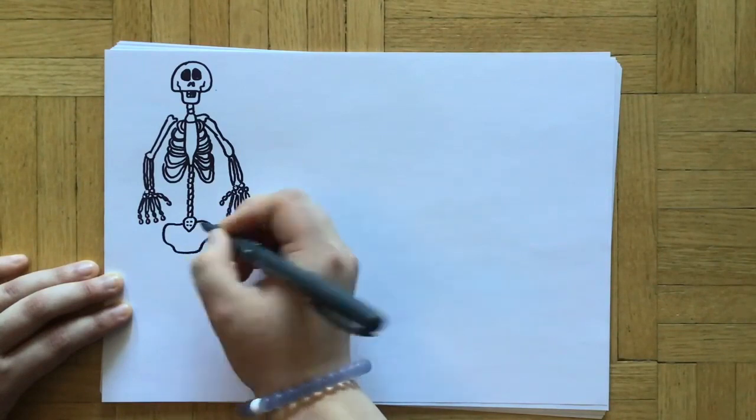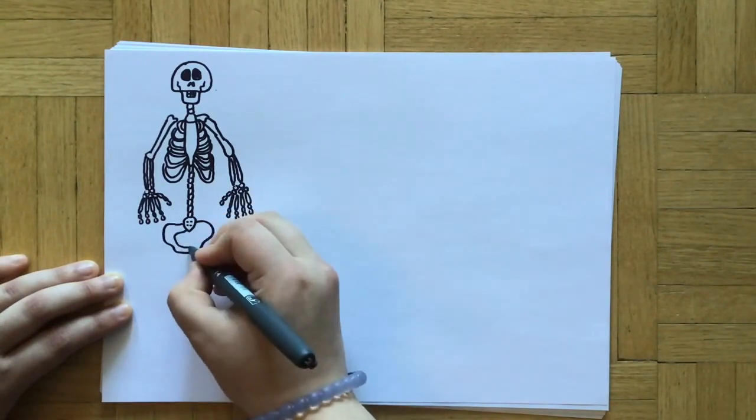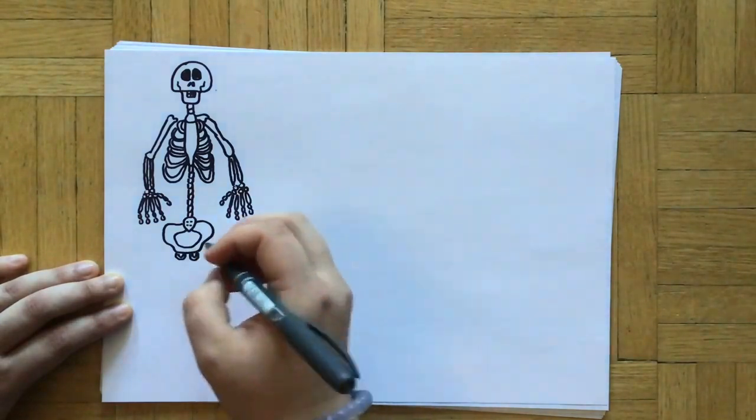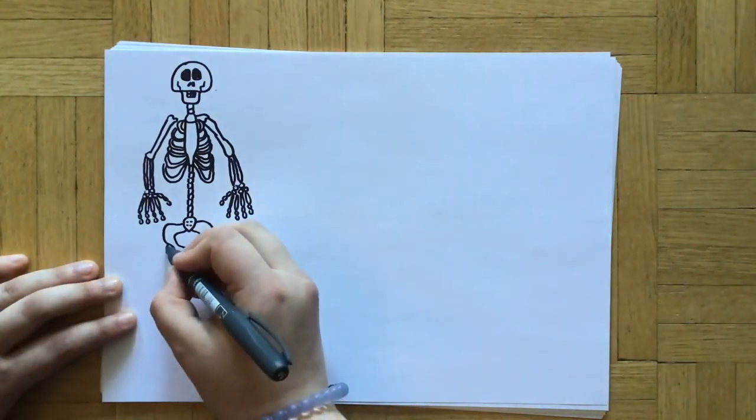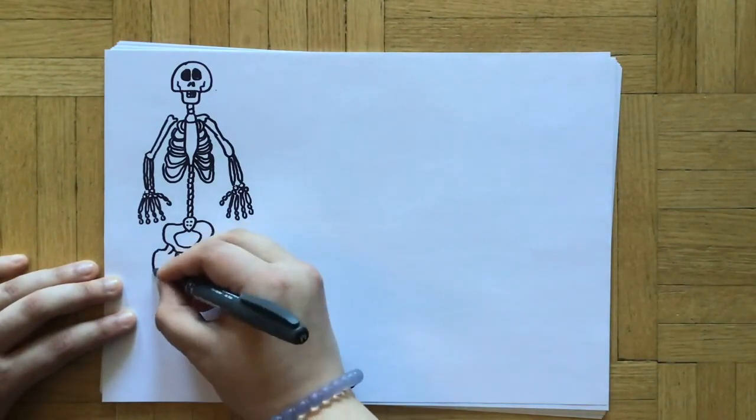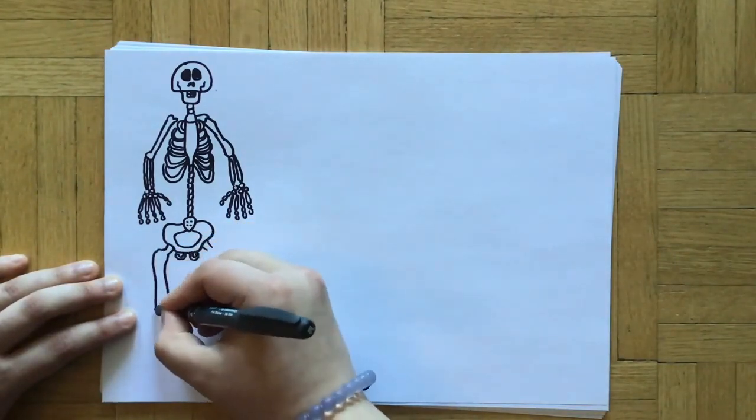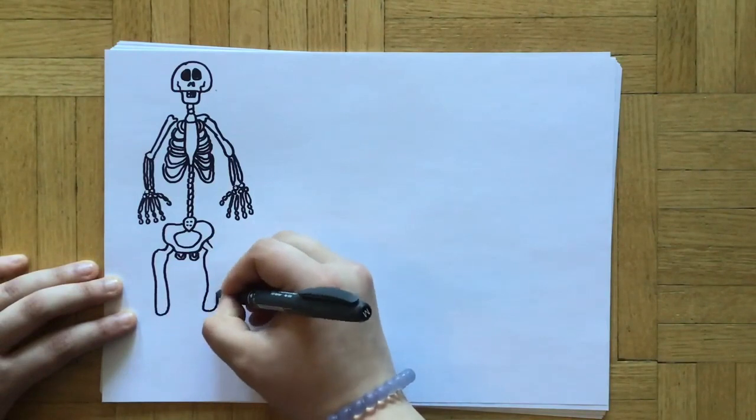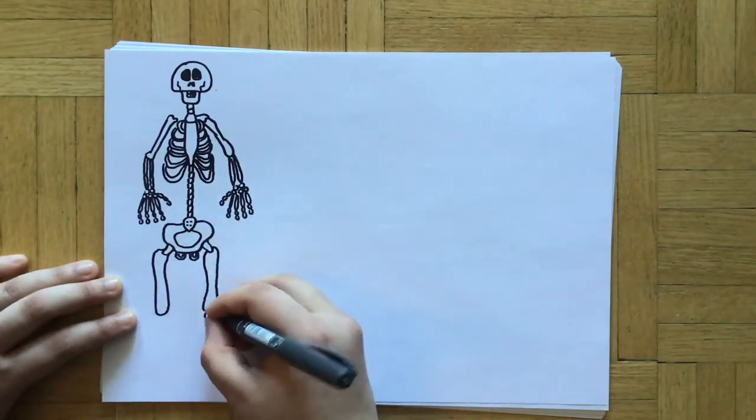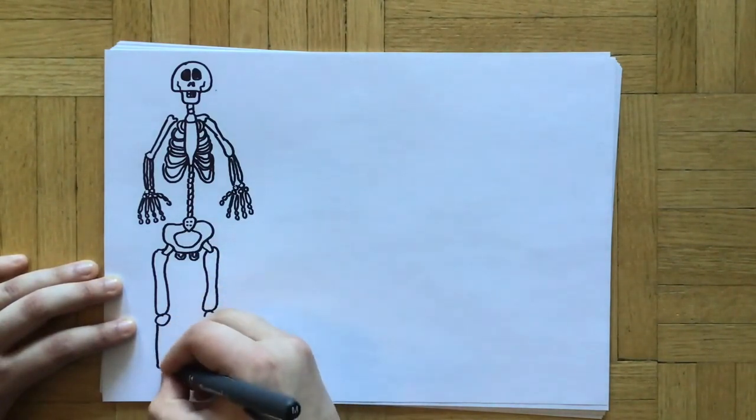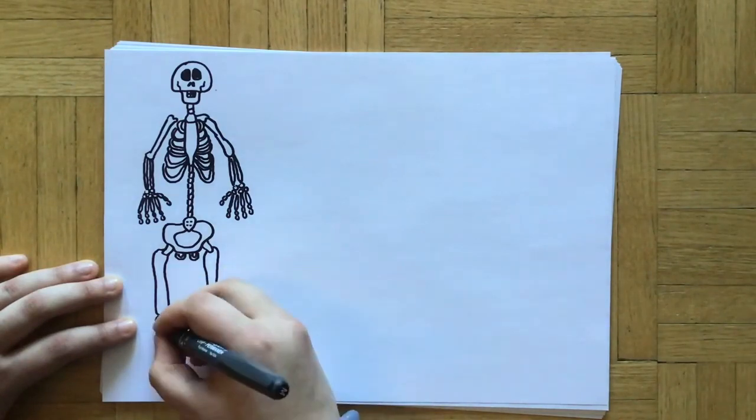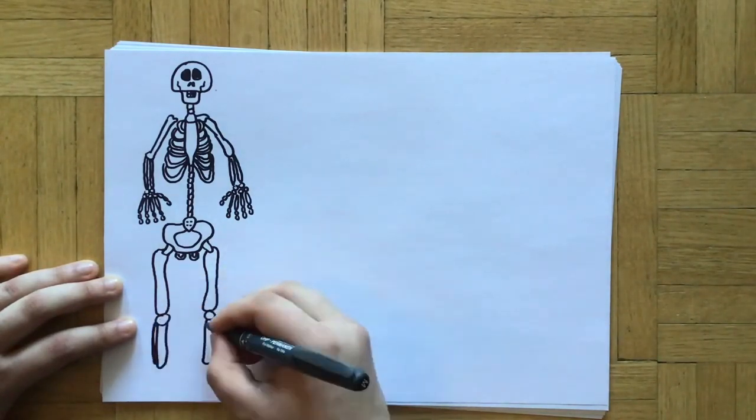Then at the bottom of our spine we've got our pelvic bone, and that is where our pelvis is. Onto the pelvic bone are attached our biggest bones called the femurs. So the femur is the bone that is inside your thigh.